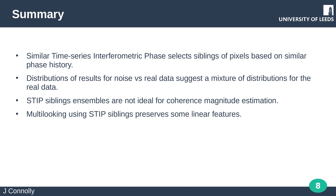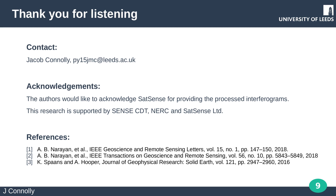So we've been exploring the use of STIP and whether it has any advantage over other algorithms for targets with variable coherence. Comparing STIP on noisy and real data suggests a mixture of distributions relating to incoherent and coherent pixels. In the case of coherence estimation, neighbouring pixels share some siblings which cause smearing, and pixels with few siblings have erroneously high coherence. Finally, STIP may offer some advantage in multi-looking, particularly with regards to linear features. Thank you for listening and feel free to get in touch with any questions.